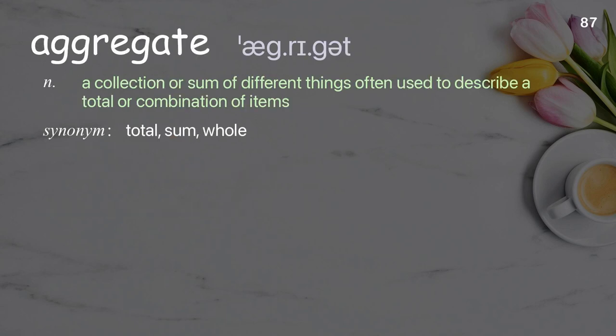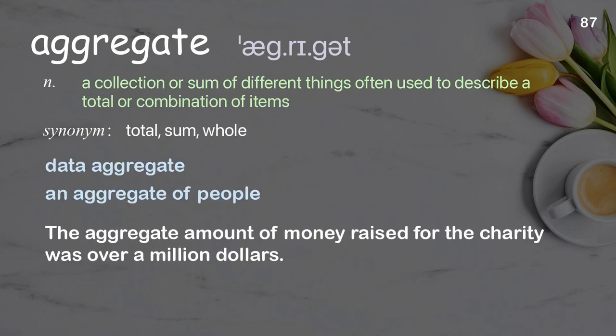Aggregate: a collection of different things, often used to describe a total or combination of items. Examples: data aggregate, an aggregate of people. The aggregate amount of money raised for the charity was over a million dollars.